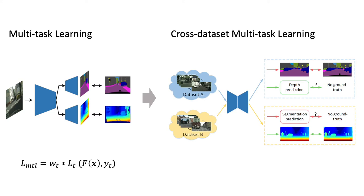We consider the setting where only disjoint datasets are at our disposal with partial ground truths — for example, dataset A developed for semantic segmentation and dataset B collected for depth estimation. It is in line with our intuition that a model can learn generalized representations from different datasets while ensuring at least one reliable supervision to train each task.